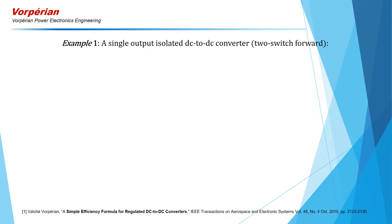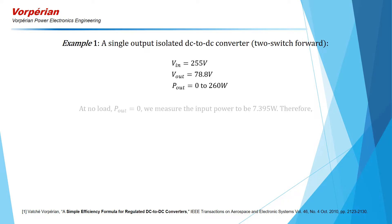For our first example, we consider a single output isolated DC to DC converter — a two-switch forward converter. It has an input voltage of 255 volts, an output voltage of 78.8 volts, and a maximum output power of 260 watts. On this converter, we measure the input power at no load to be 7.395 watts. Therefore, our first parameter POH is equal to 7.395 watts.